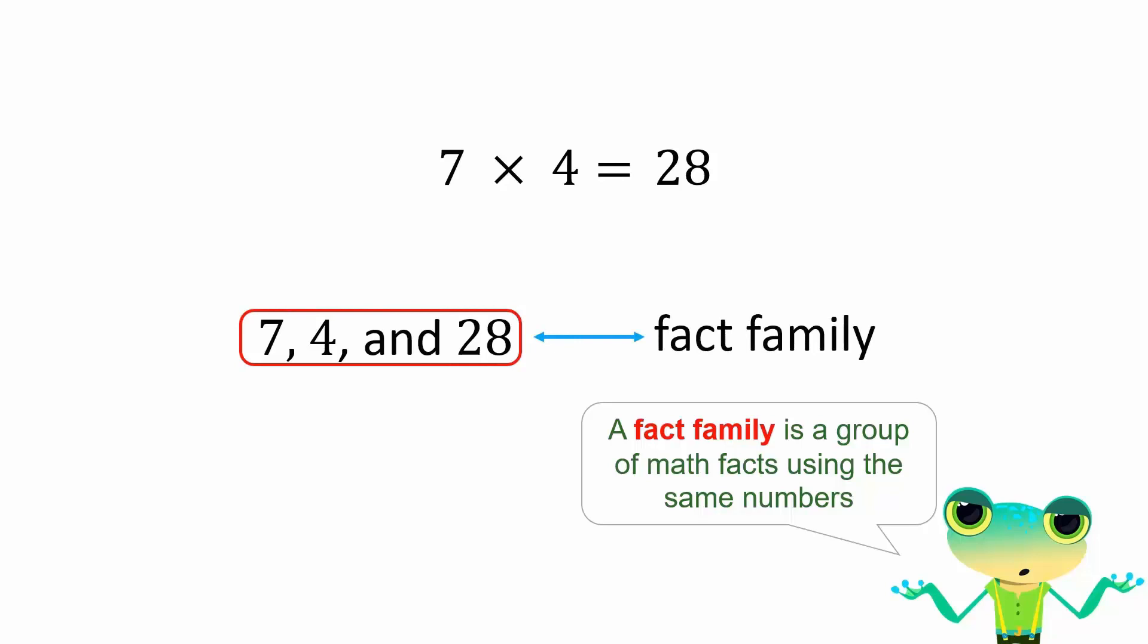Now, if we want to calculate the inverse of this multiplication, we write the largest number first, which is 28, and then put a division sign. We can either write 7 or 4 after this to calculate the inverse of the multiplication. Let's write 7 first, this results in 4. If we write 4, then this will result in 7. When we write the two division statements for 28, they can be called inverse statements.